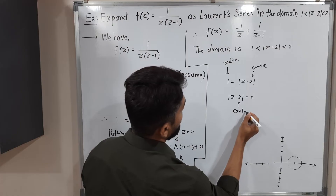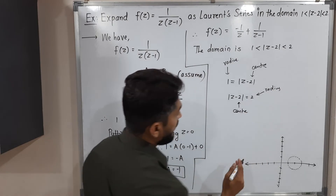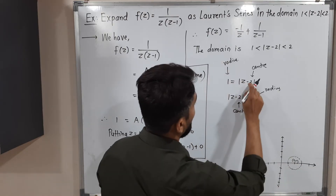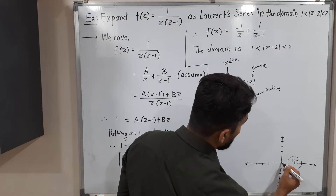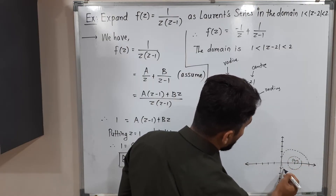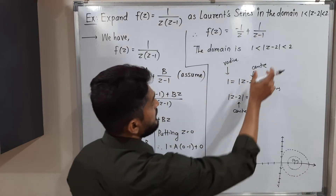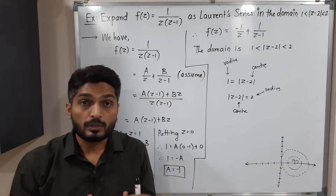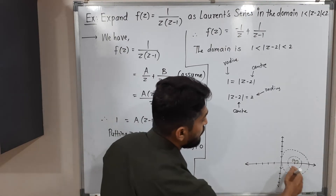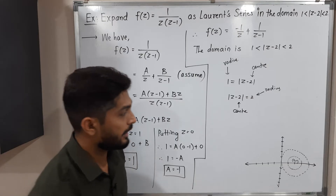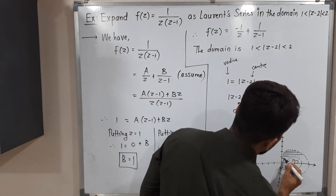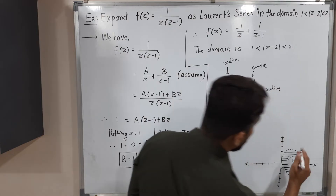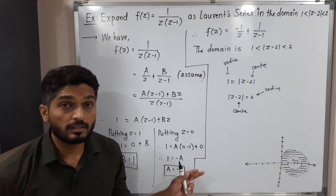The second equality |z-2| = 2 gives a circle with the same center (2,0) but radius 2 — a larger circle. Since |z-2| < 2, we take the interior of this larger circle. The region of convergence is therefore the annular region between the two concentric circles — a ring-shaped region.